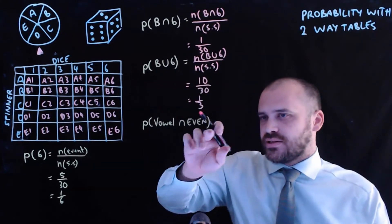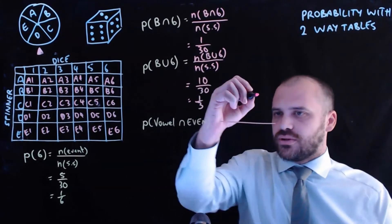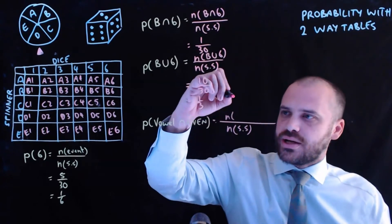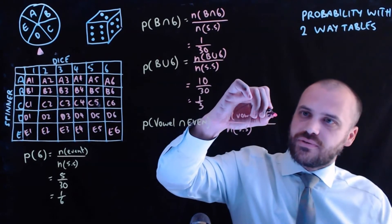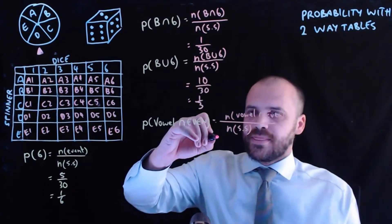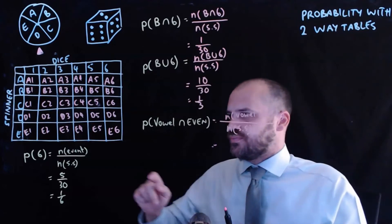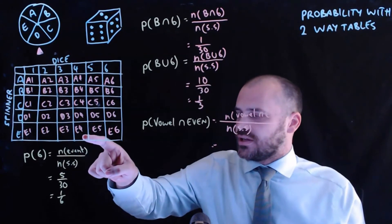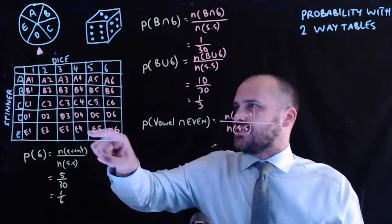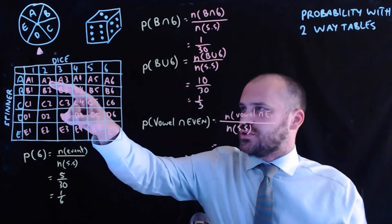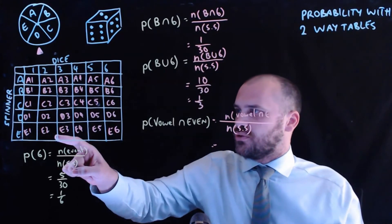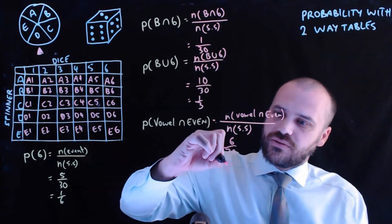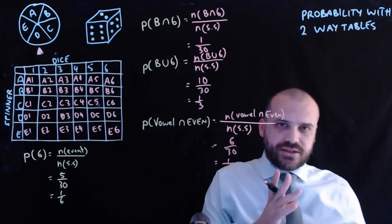Now, the probability of a vowel and an even number — this is an intersection, an 'and'. The sample space is 30. We look for cells that are both a vowel and an even number. Going through systematically: vowel and even, vowel and even, vowel and even — for each vowel row (A and E), we count the even columns (2, 4, 6). That gives six ways total. So the probability is six out of 30, which is one in five. There's a one in five chance of getting a vowel and an even number.